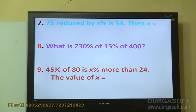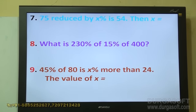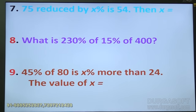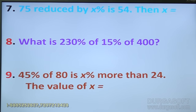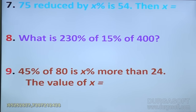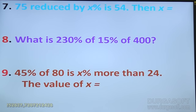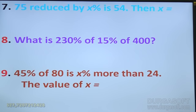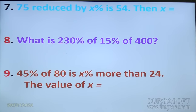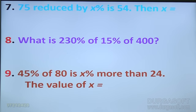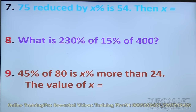Question number 7: 75 reduced by x percent is 54, then x equals — try that on your own. Question number 8: what is 230 percent of 15 percent of 400? By looking at the question it seems very difficult, but just by using the keywords you can solve it within 5 seconds.